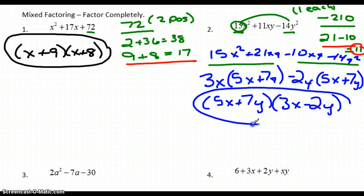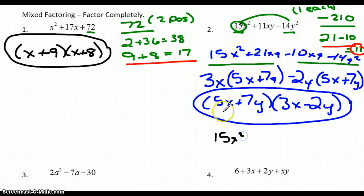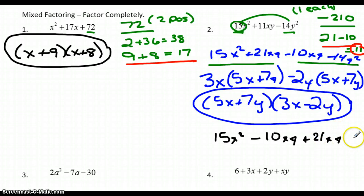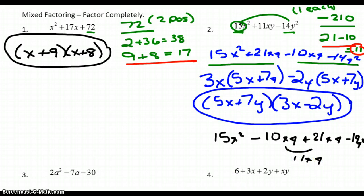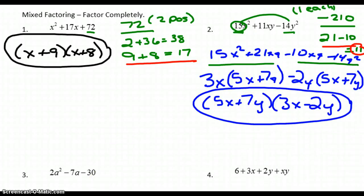Checking the answer: 5x times 3x is 15x², 5x times −2y is −10xy, 7y times 3x is +21xy, and 7y times −2y is −14y². Those do add up to 11xy in the middle, so the factorization 15x² + 11xy − 14y² = (5x + 7y)(3x − 2y) checks out.